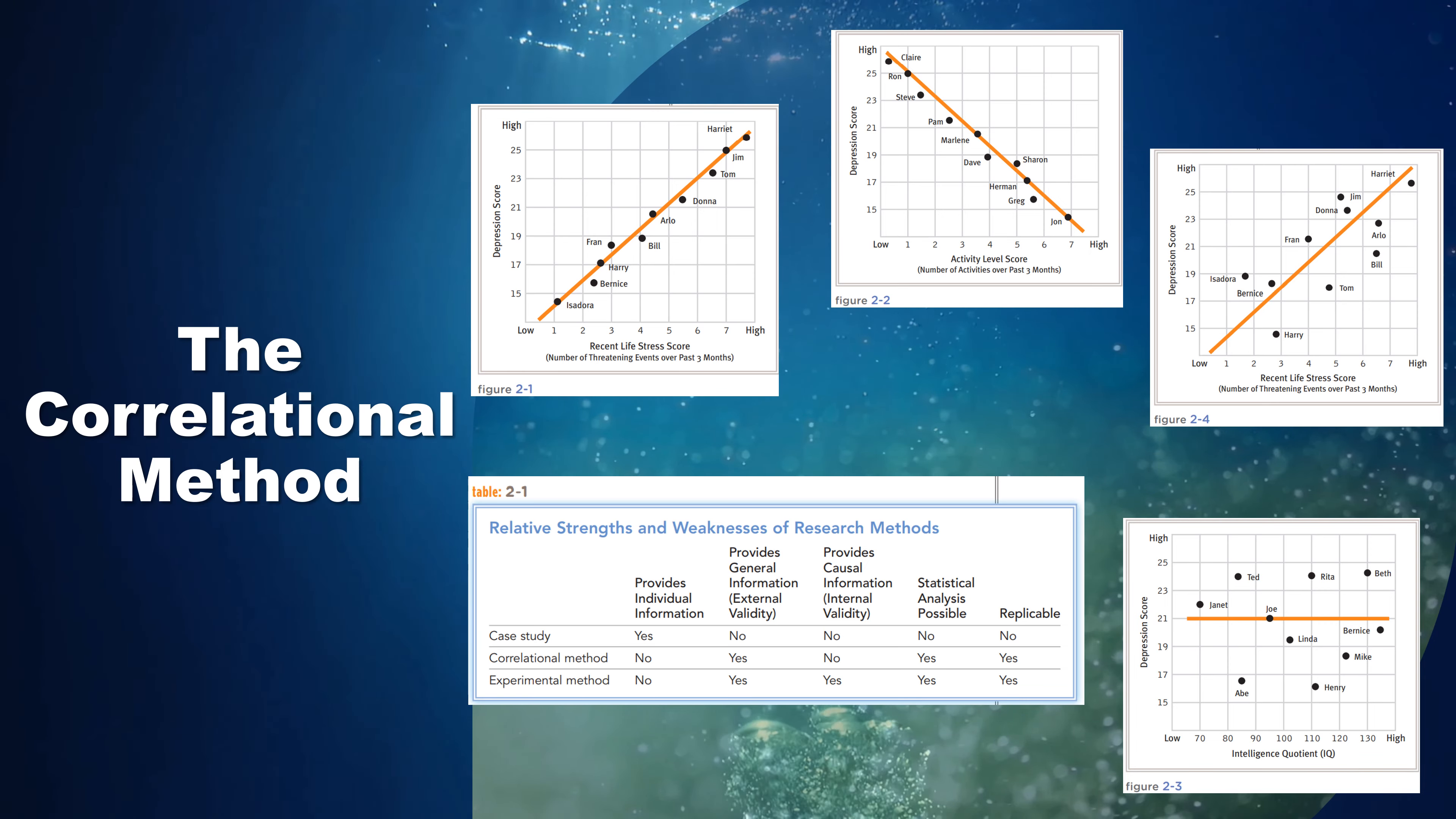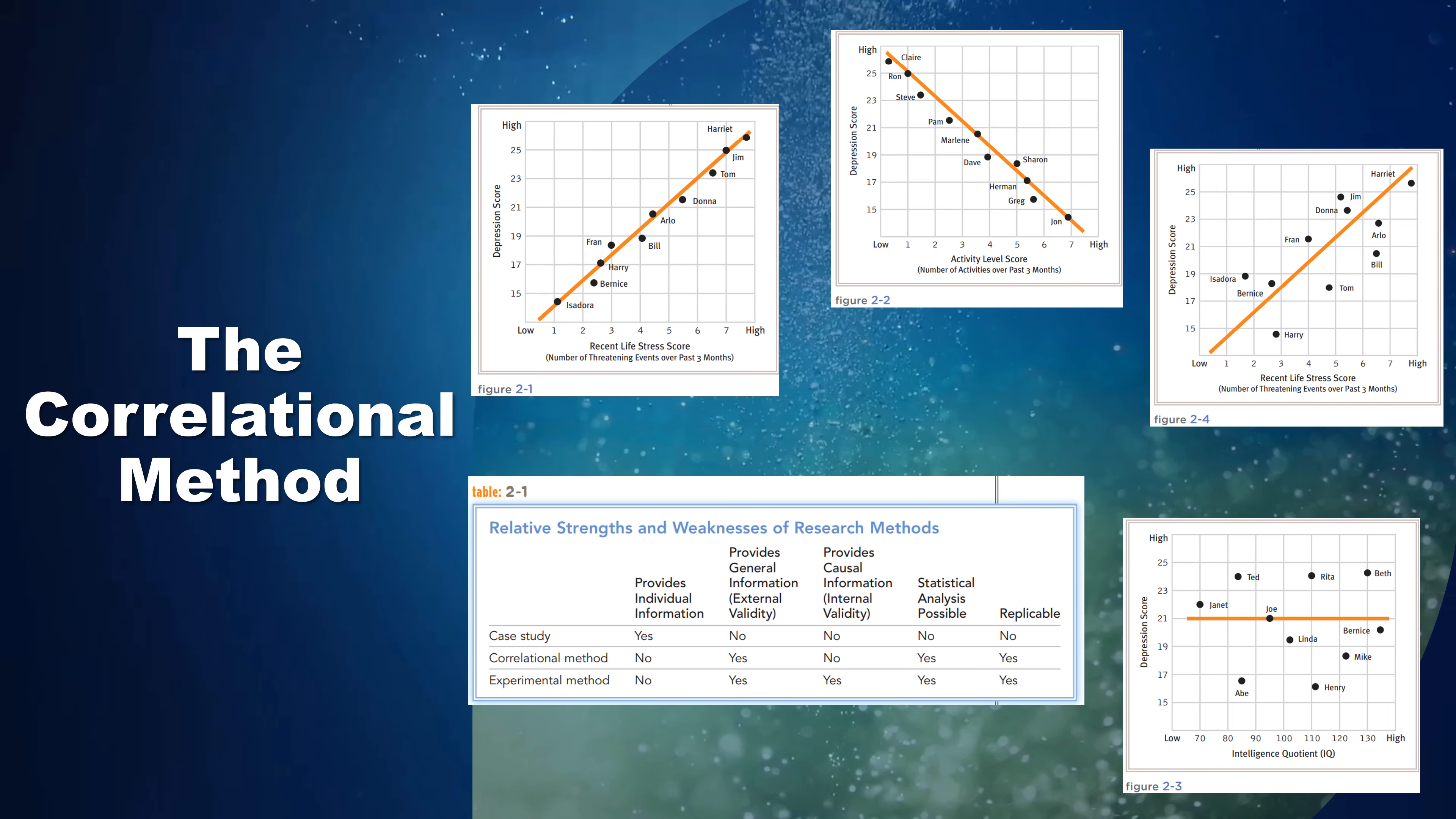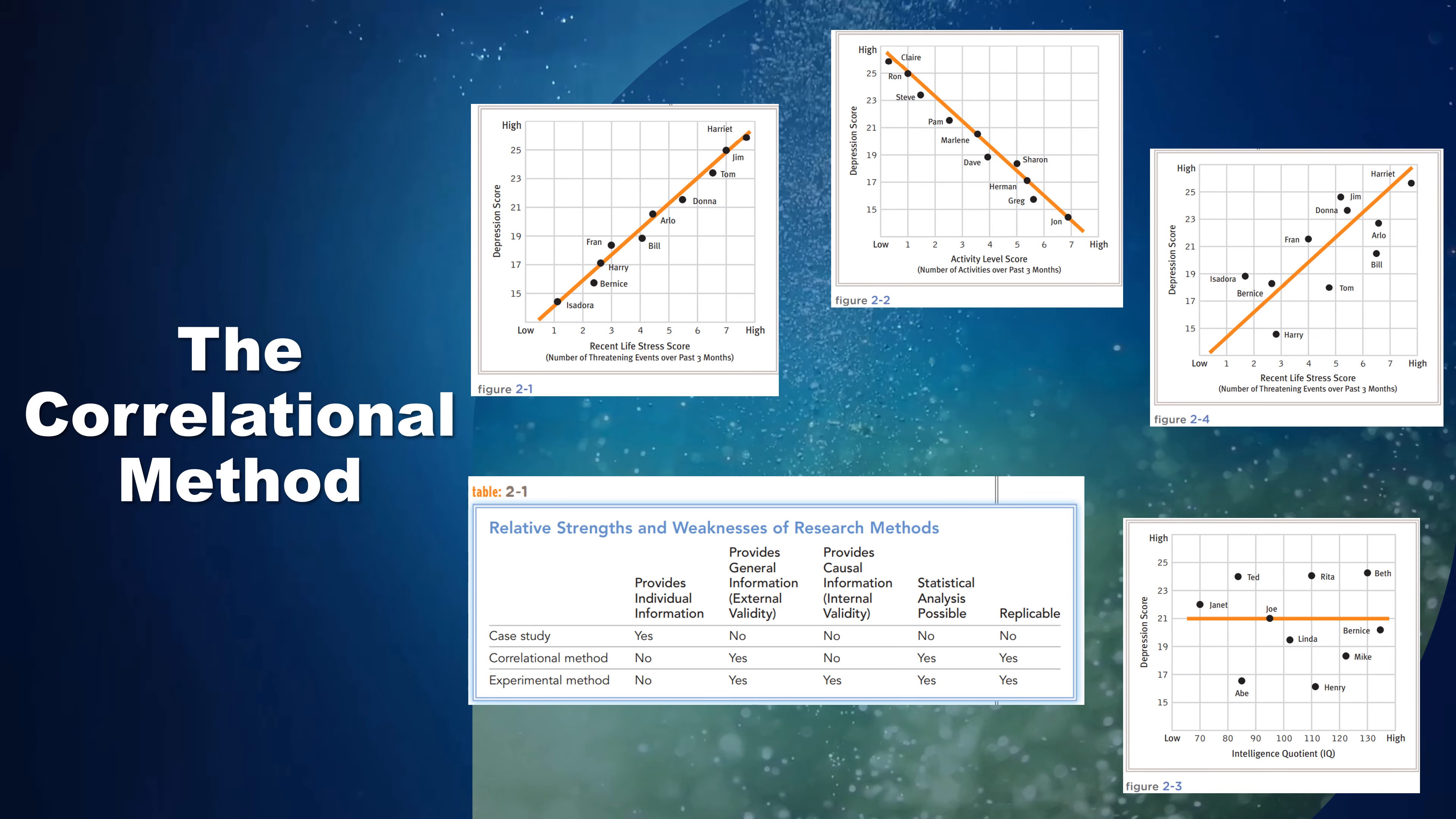There is yet a third possible outcome for a correlational study. The variables under study may be unrelated, meaning that there is no consistent relationship between them. As the measures of one variable increase, those of the other variable sometimes increase and sometimes decrease. The graph of this outcome looks like Figure 2-3. Here the line of best fit is horizontal, with no slope at all.